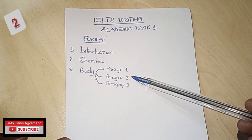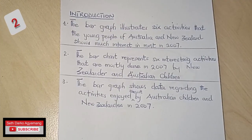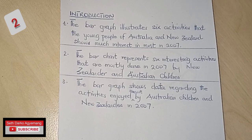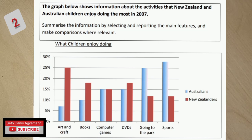Now I'm going to demonstrate on the computer how to write an introduction using the question on screen. This is actually a bar chart — this is how it looks. You get this and you have to give a description of it. Following the format of introduction, overview, body, I'll go step by step. I want you to critically look at the Task 1 bar chart question. The question states: 'The graph below shows information about the activities that New Zealand and Australian children enjoy doing the most in 2007.'